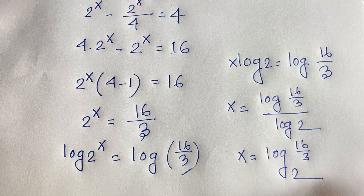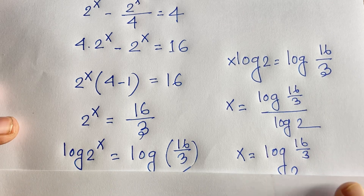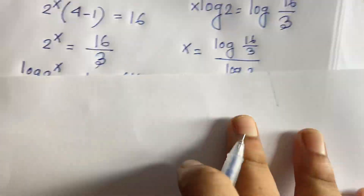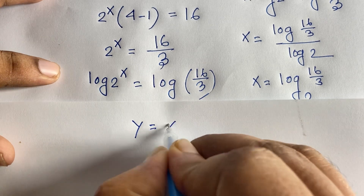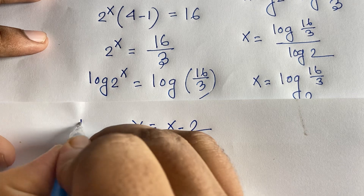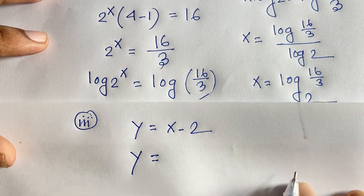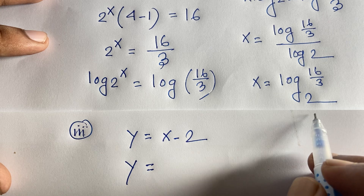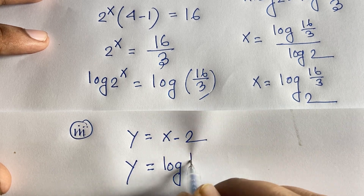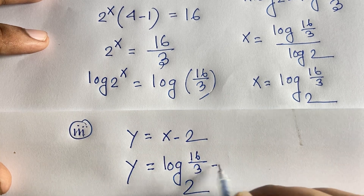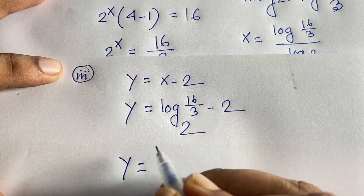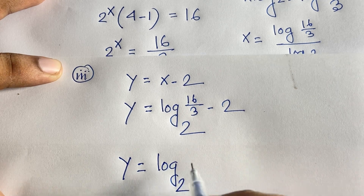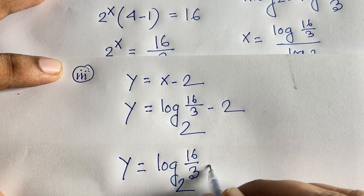Now we find the value of y. From our third equation, y is equal to x minus 2. Substituting x equals log base 2 of (16 over 3), we get y equals log base 2 of (16 over 3) minus 2.